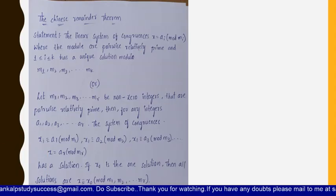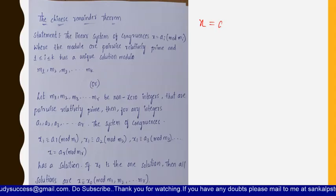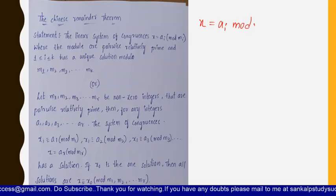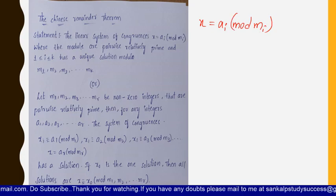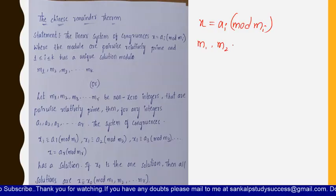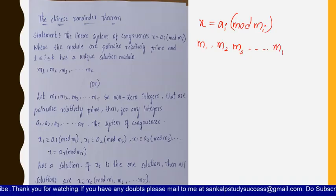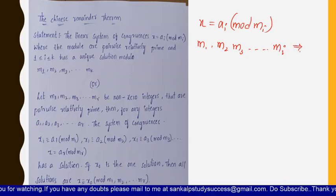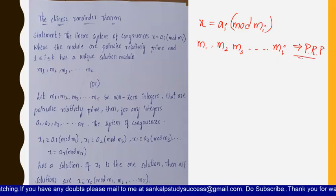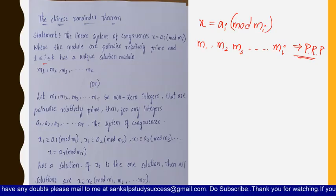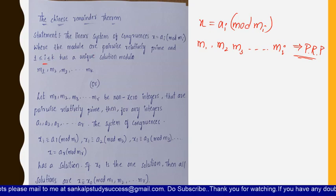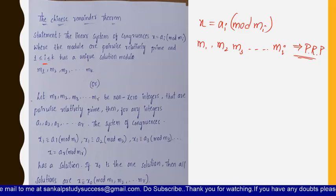The Chinese Remainder Theorem states that a linear system of congruences of the form x ≡ aᵢ mod mᵢ, where the moduli are pairwise relatively prime — that means m1, m2, m3 and so on up to mᵢ are pairwise relatively prime — and i lies between 1 ≤ i ≤ k, has a unique solution.